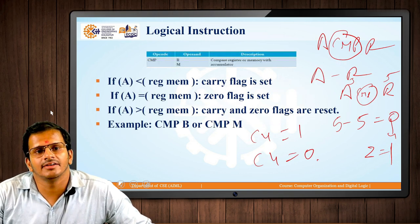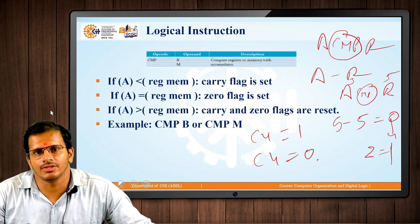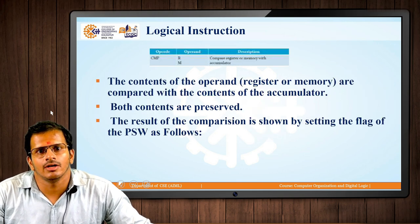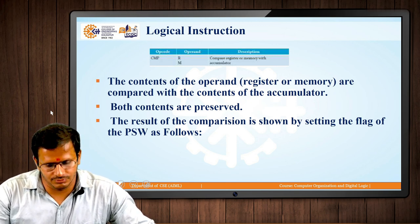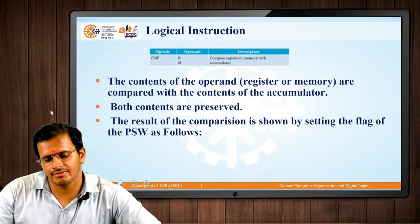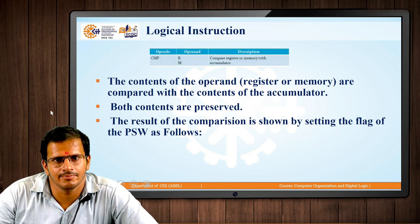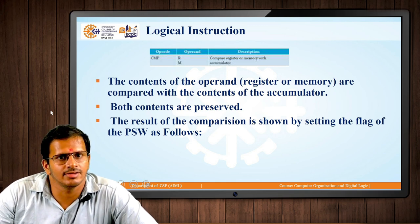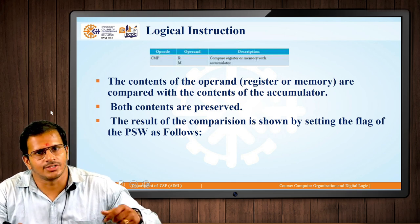The comparison of the accumulator is done either with the register or with the memory location pointer content. The content from the register or from the memory location pointer is compared with the accumulator, and both contents are preserved after the operation. The flag register or PSW register will be changed through this operation.